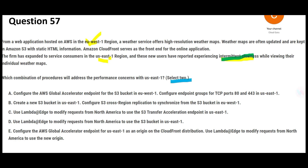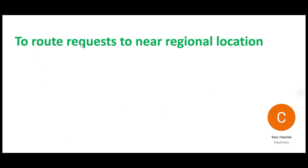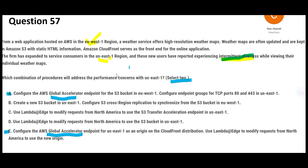We need to choose two answers. Let us look at option A first. Option A is talking about Global Accelerator, and option E is also talking about Global Accelerator. Global Accelerators make use of edge locations primarily to route requests to the nearest regional location. In this scenario, that will not work.